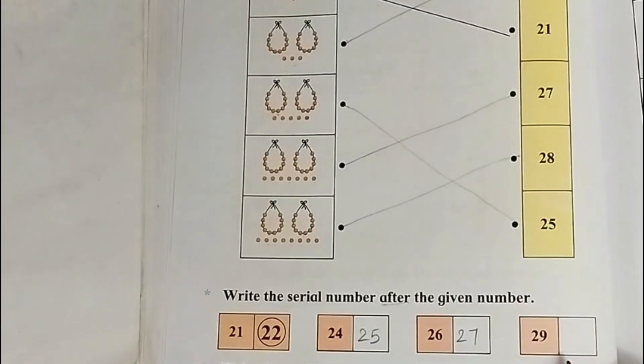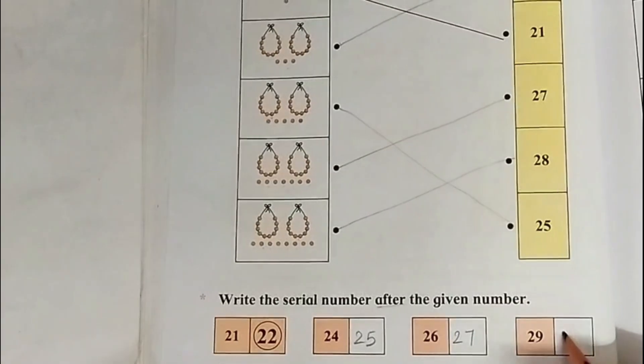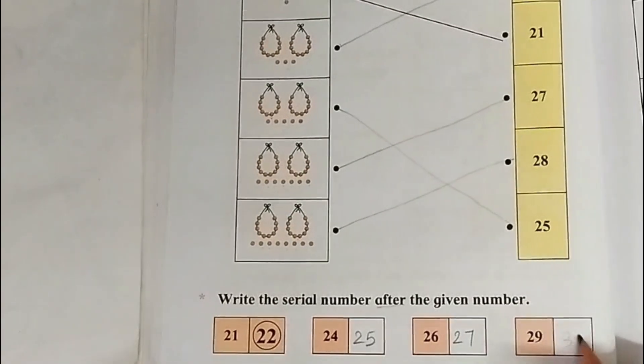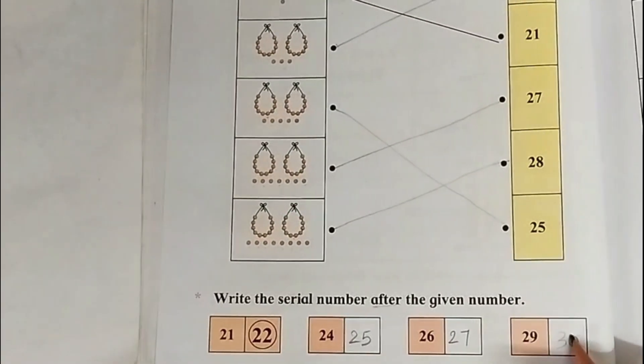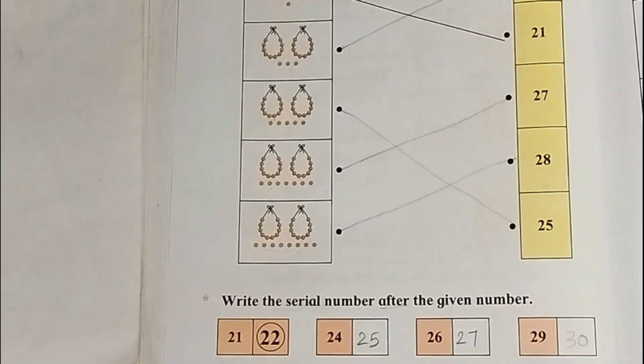Next: 29. Which number comes after 29? 3, 0 = 30.